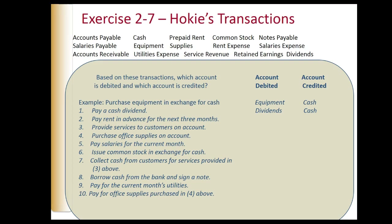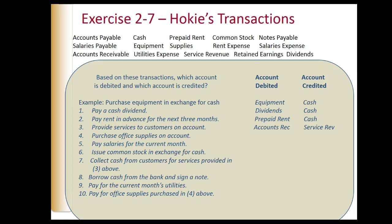We pay rent in advance for the next three months — paying ahead of time gives a future benefit. Prepaid rent increases as an asset, and cash decreases. Next, we provide services to customers on account — we didn't get cash, so accounts receivable increases as a future benefit, and service revenue is credited as a revenue account. We purchase office supplies on account — supplies increase as an asset, and since we owe money, the liability increases, which is a credit.